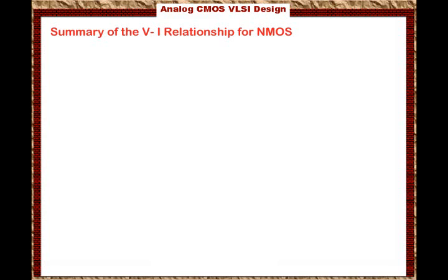Let us have a summary of the VI relationship for the NMOS transistor. As you can see in the diagram here, the transistor has four terminals. We define VGS as the voltage from the gate to the source, VDS as the voltage from the drain to the source, and VSB as the voltage from the source to the body.